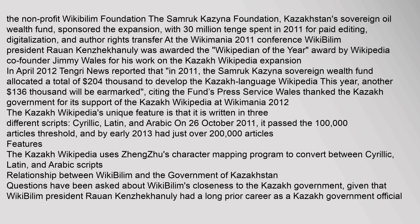Features: The Kazakh Wikipedia uses Zheng Zhu's character mapping program to convert between Cyrillic, Latin, and Arabic scripts.